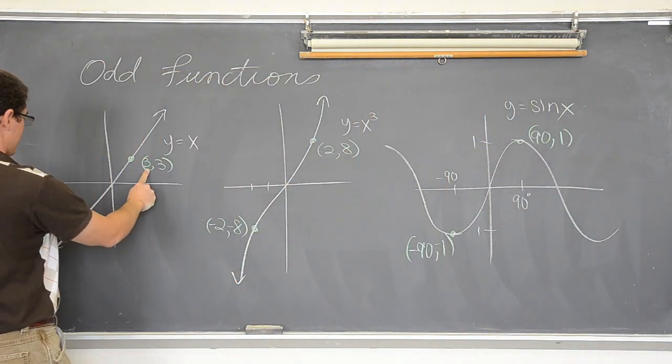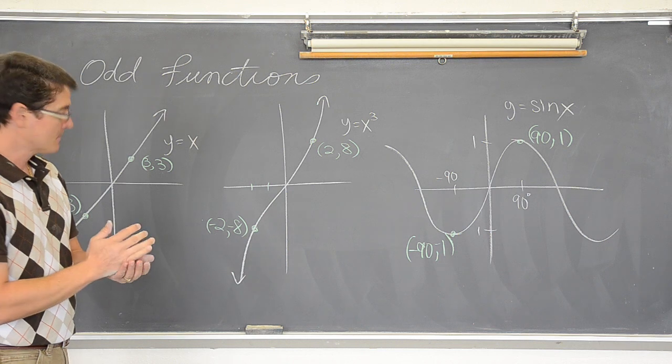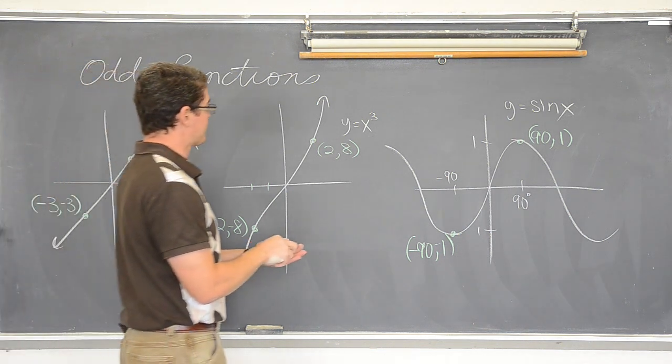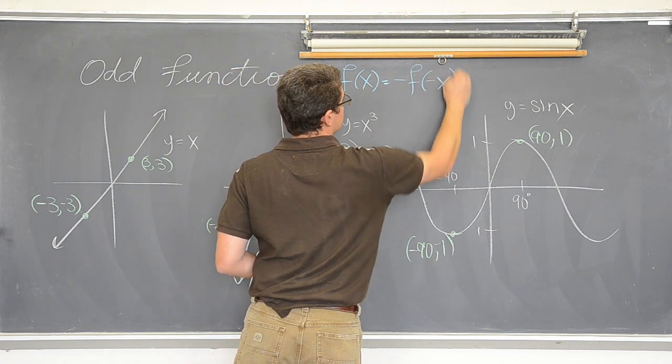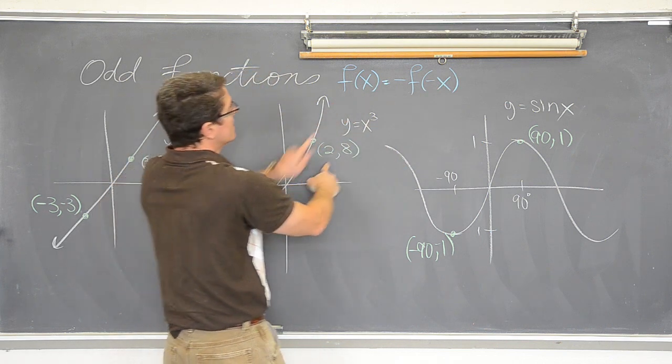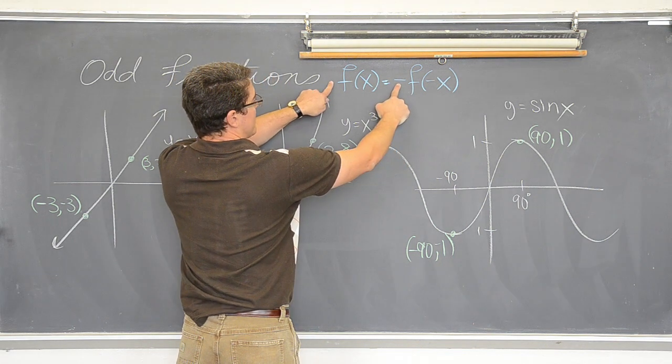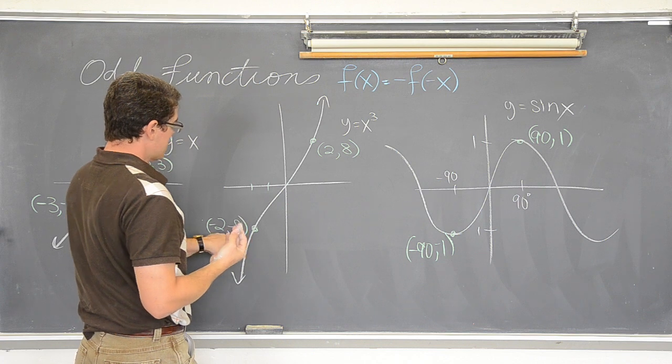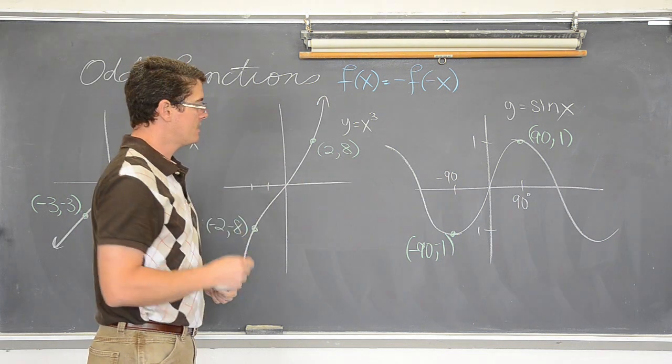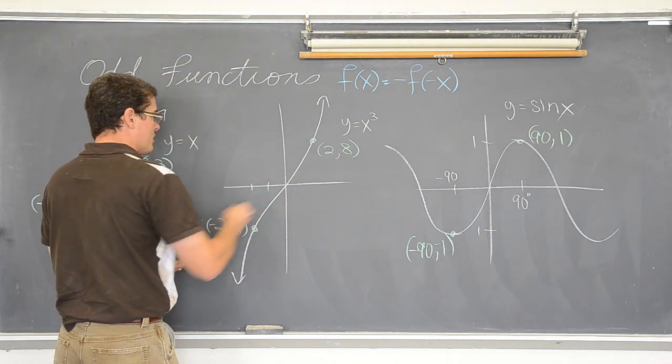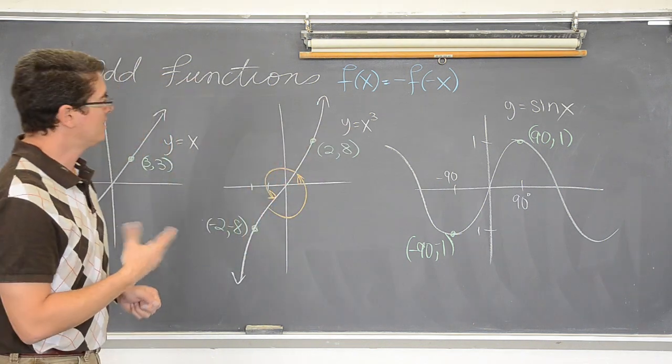These all have opposite x's and instead of the same y, these opposite x values give you y values that are opposite. So, odd functions are defined in this format. f of x equals the opposite of f of negative x. This function notation is showing you what is happening with these numbers. You plug in opposite x's, you get out the same y value, but one is positive and one is negative. They also have 180 degree rotational symmetry. If I could just take this board and flip it upside down, they would look the same.